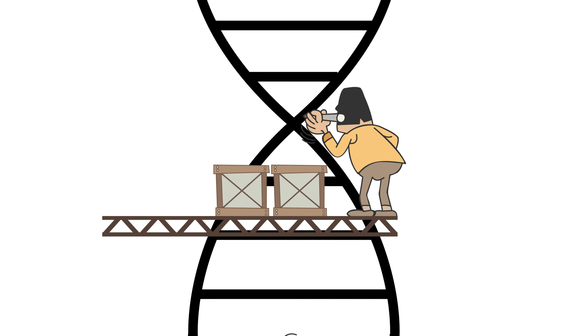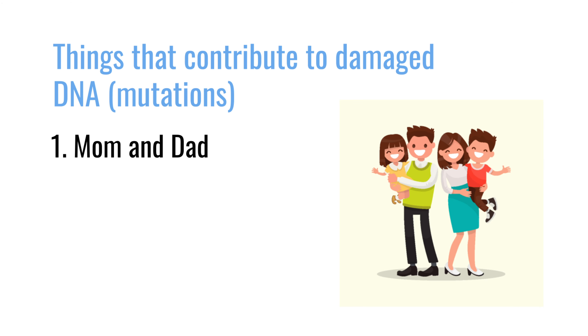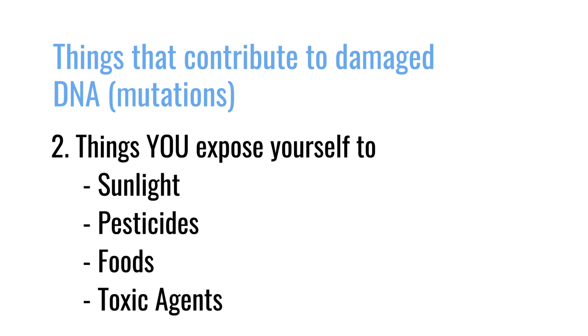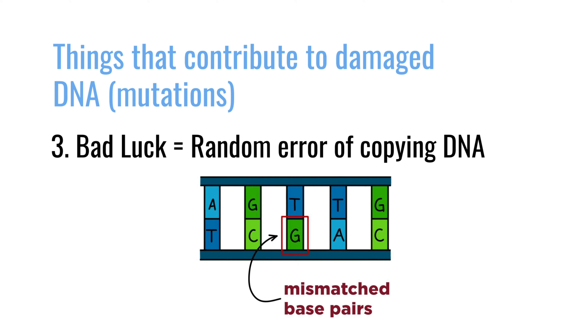Some of us do a better job of repairing. Some of us don't repair nearly as well. So mom and dad are to blame. Things you expose yourself to are to blame. And then the third one, which is the hardest one to explain, is bad luck. Imagine you copy those three billion bases over and over and over again — every once in a while, you make a mistake. And it's nobody's fault. It had nothing to do with what you ate. It had nothing to do with mom and dad. It's just that the system put the wrong piece in there. It's a mutation, but it's a random error of copying DNA.